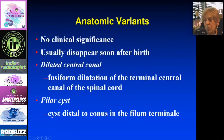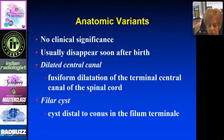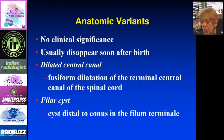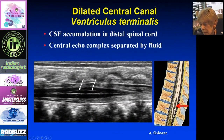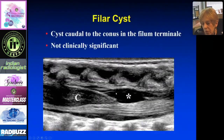There are a few anatomic variants you need to recognize. These usually disappear after birth and are not significant. You can see a dilated central canal — fluid within the central canal — and you can see a cyst in the filum. The cord has an echogenic canal, but sometimes that canal contains fluid, as shown in the schematic. Leave it alone — it's just a variant. Similarly, a cyst in the filum is benign; leave it alone, it will disappear.